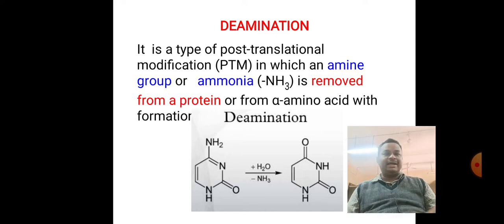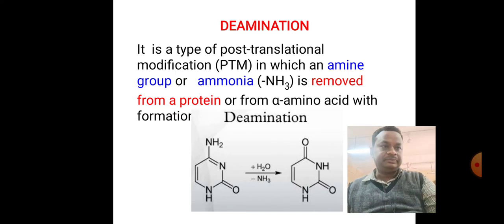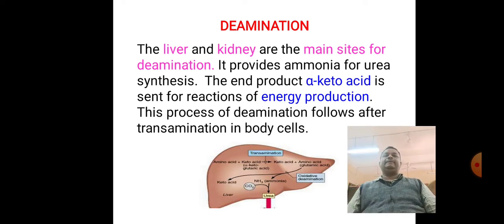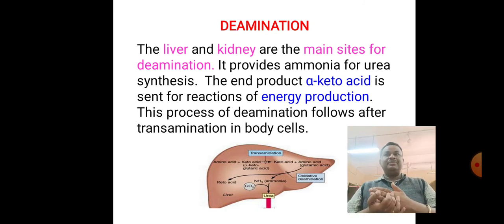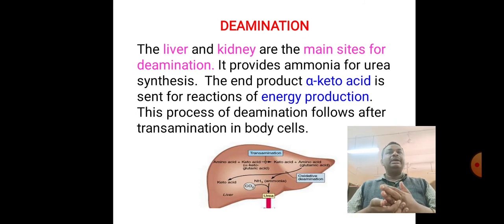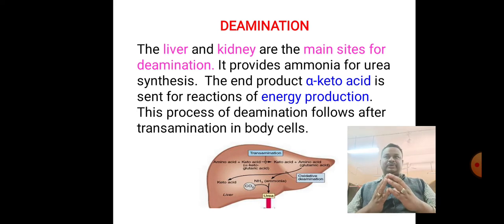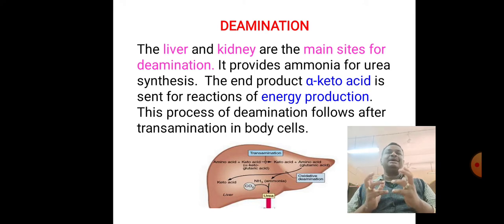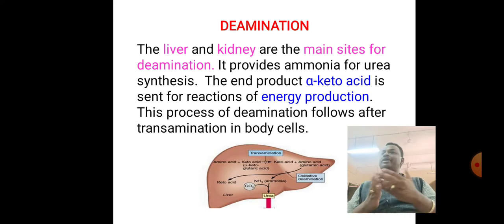In the picture you can see how the amino group is getting removed from an amino acid. The major sites of deamination include organs such as liver and kidneys. Students, remember that free ammonia is very toxic and very dangerous to a cell or organism.